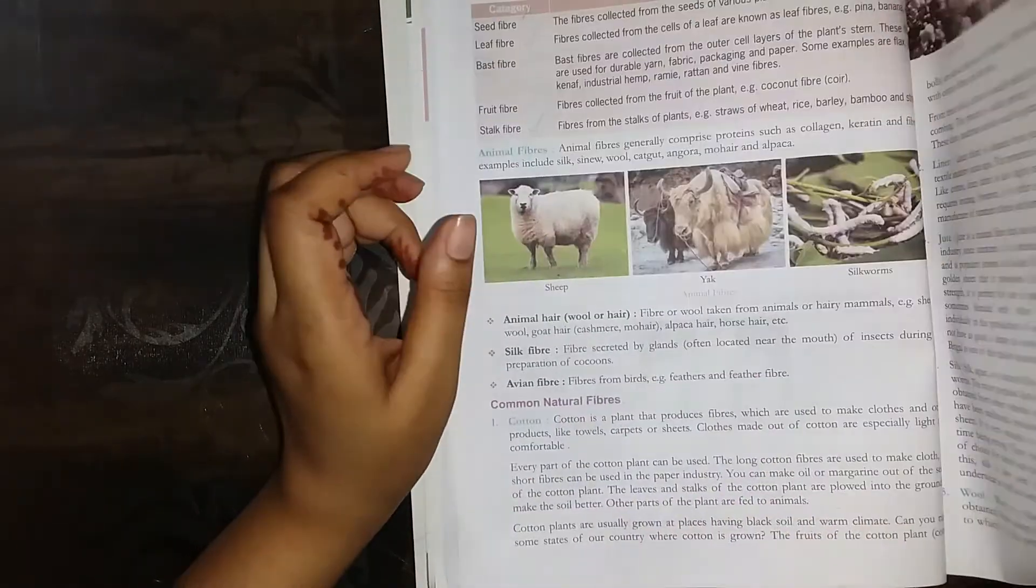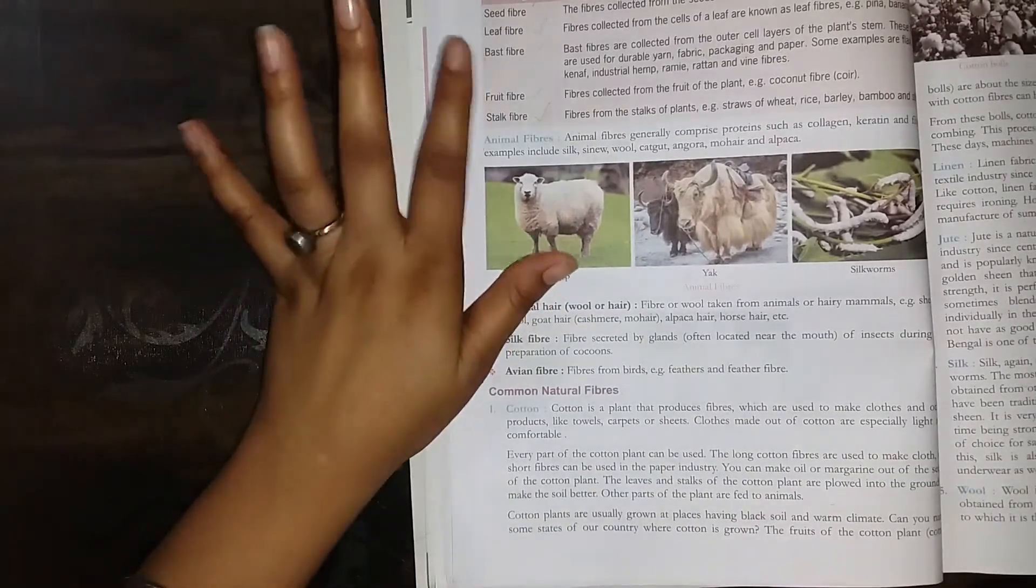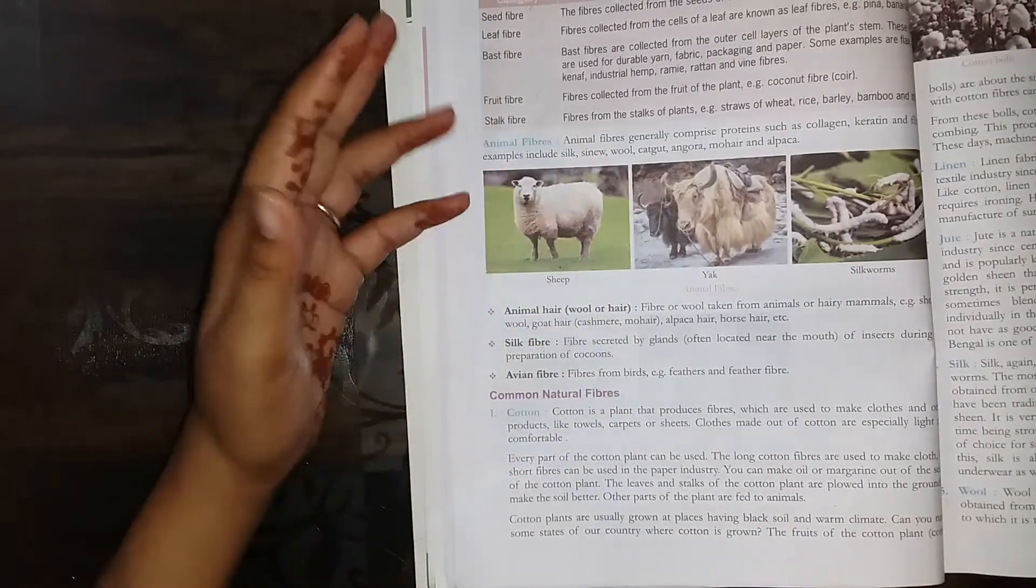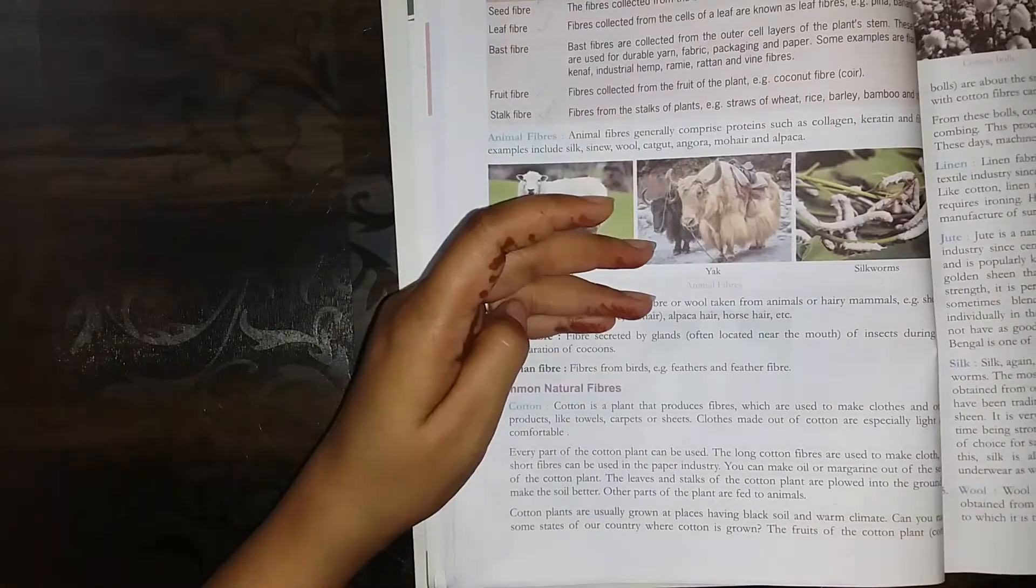First we have learned about plant fibers and animal fibers. In the last video we learned about common natural fibers. These are cotton, linen, jute, silk, and wool.